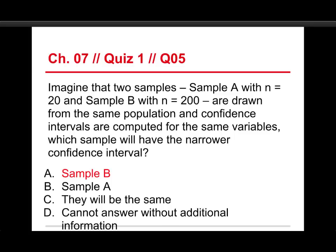And the reason for that is because it has a larger sample. A larger sample is a narrower interval. I'll show you in a second. A would be the opposite. They're not the same and you have enough information to answer them.